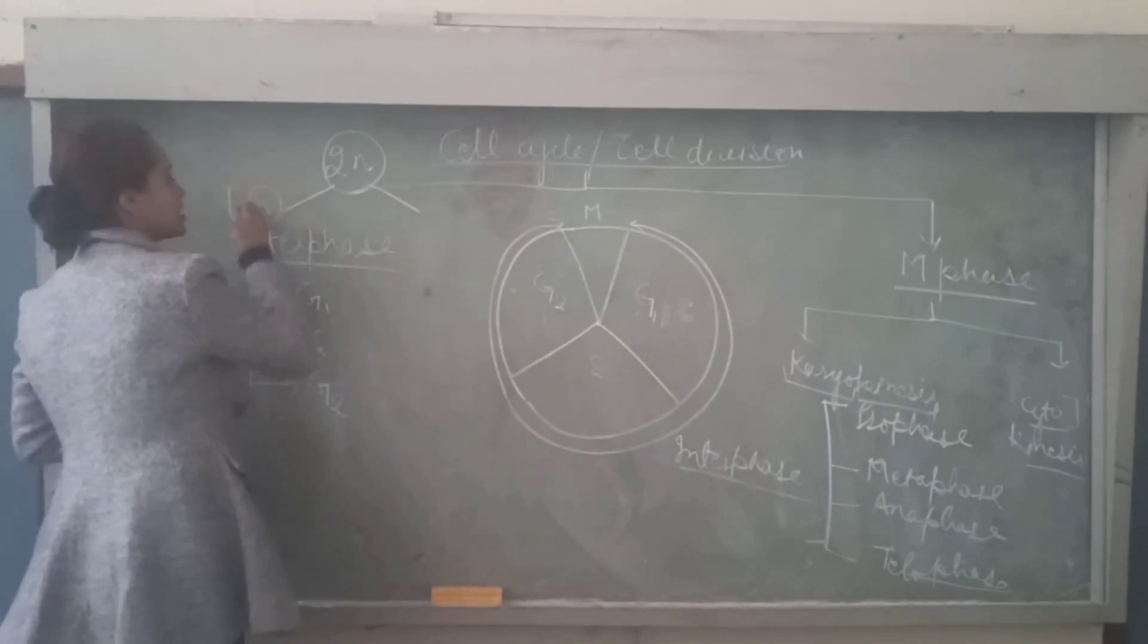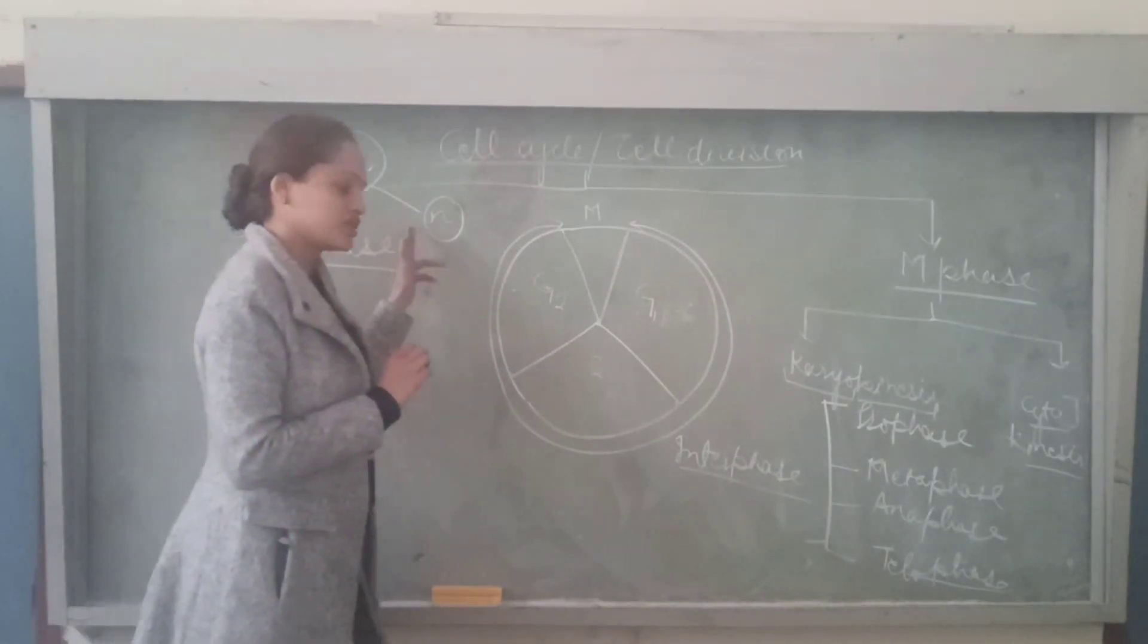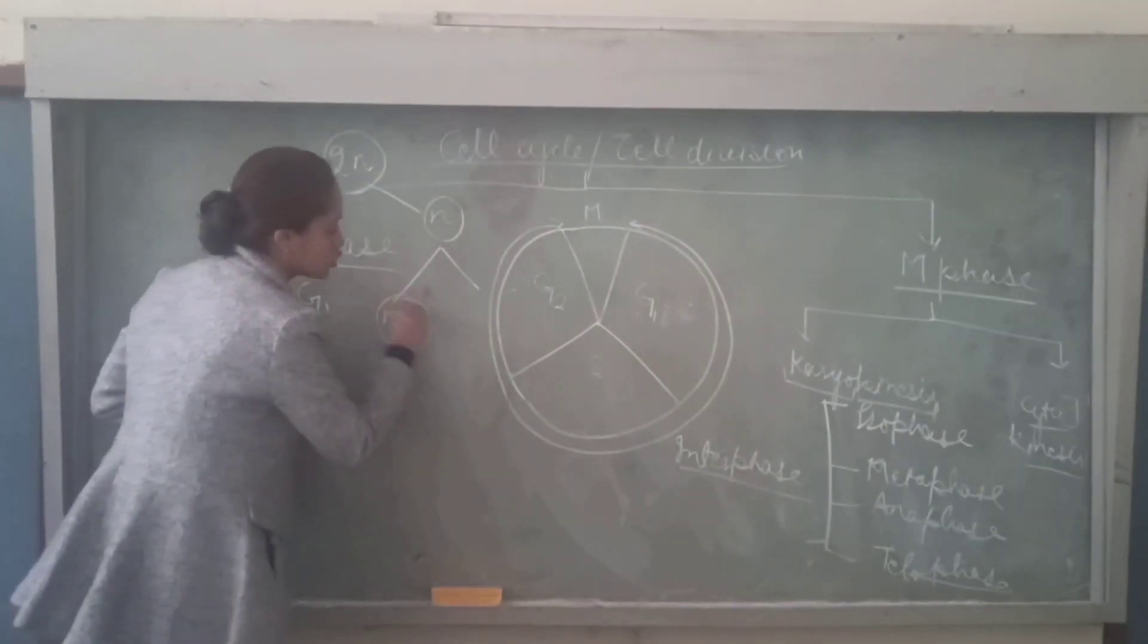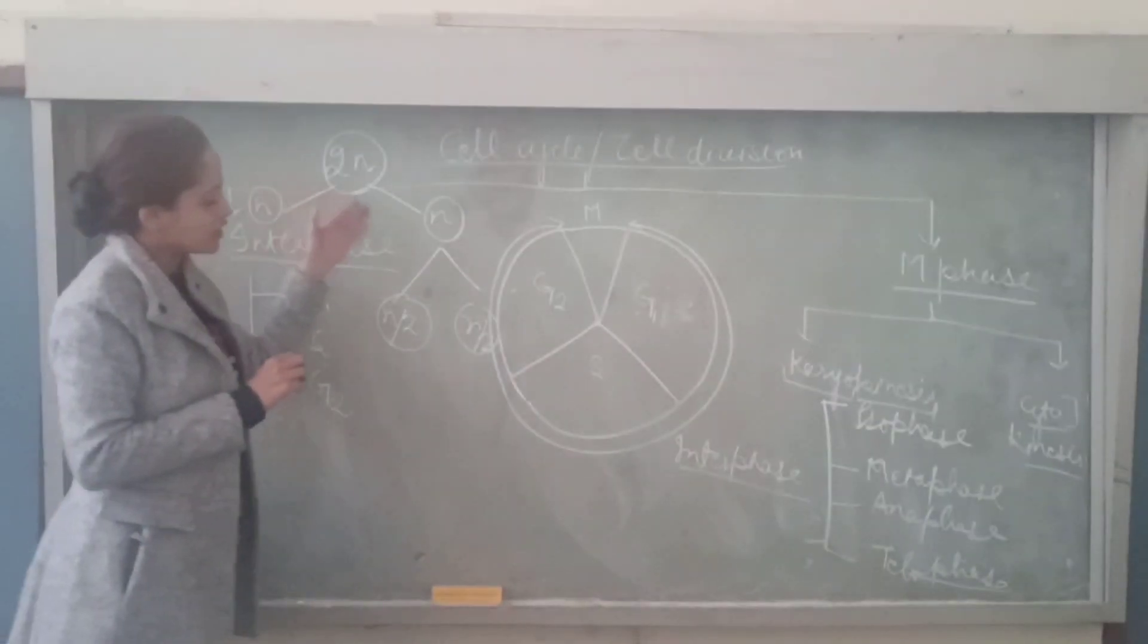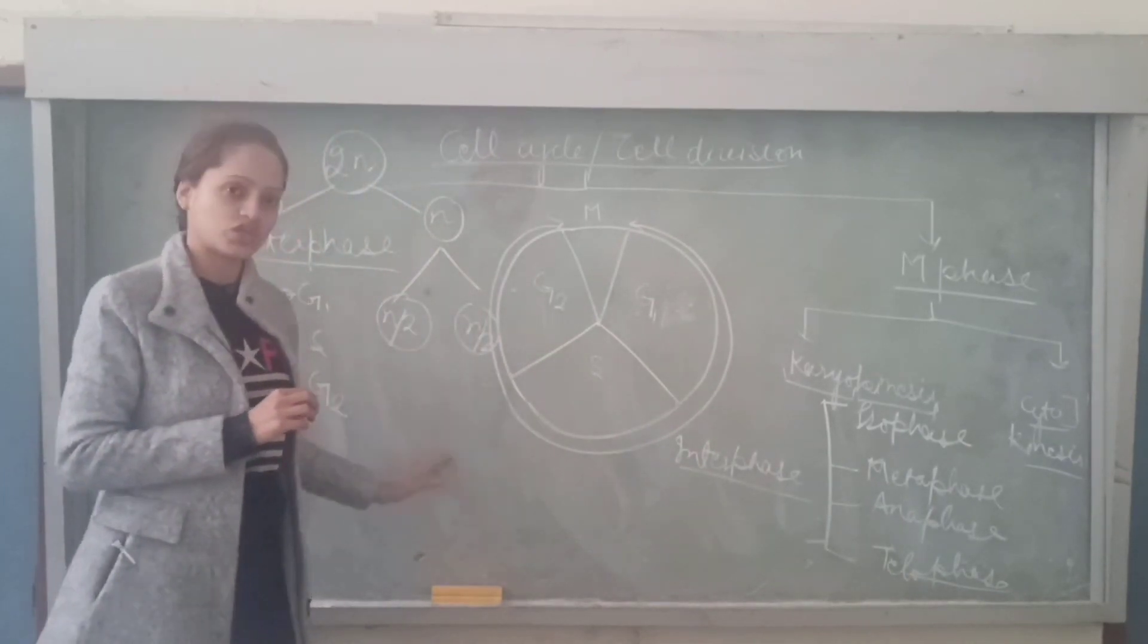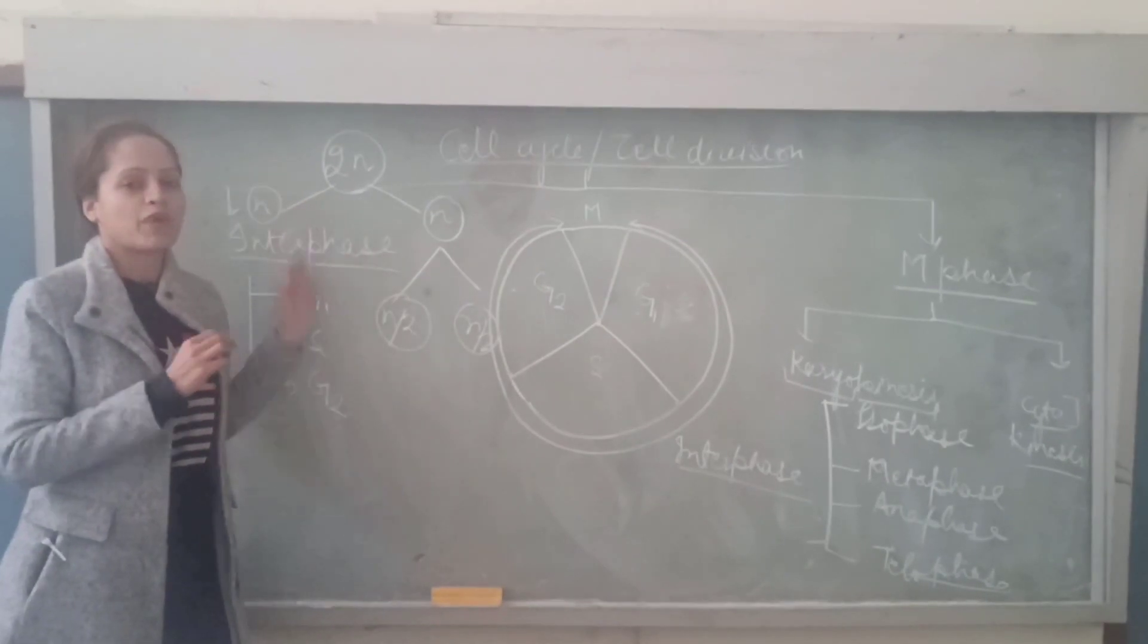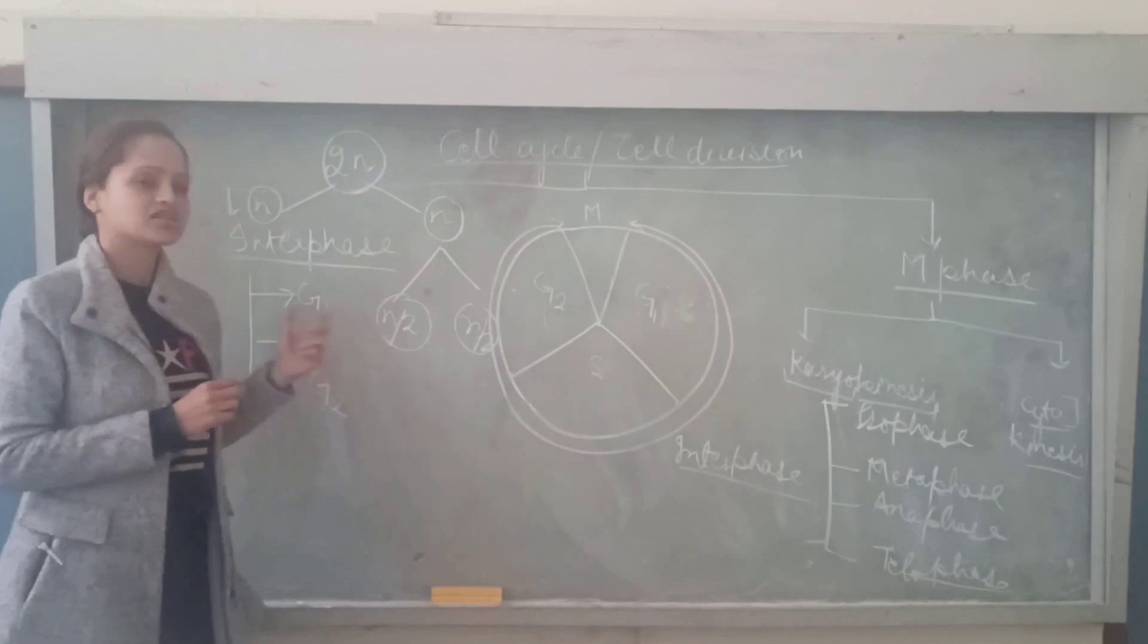we are supposed to have daughter cells with N number of chromosomes. And if this cell undergoes further division, it will have N by 2 number of chromosomes. So continuously, the number of chromosomes will decrease in each division. So to maintain the genetic constitution of an organism, it is really needed that the cell prepare itself for cell division.